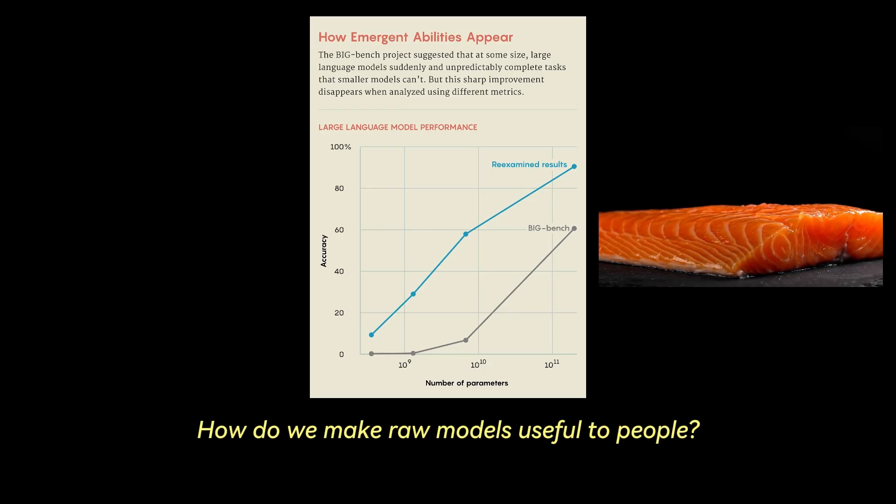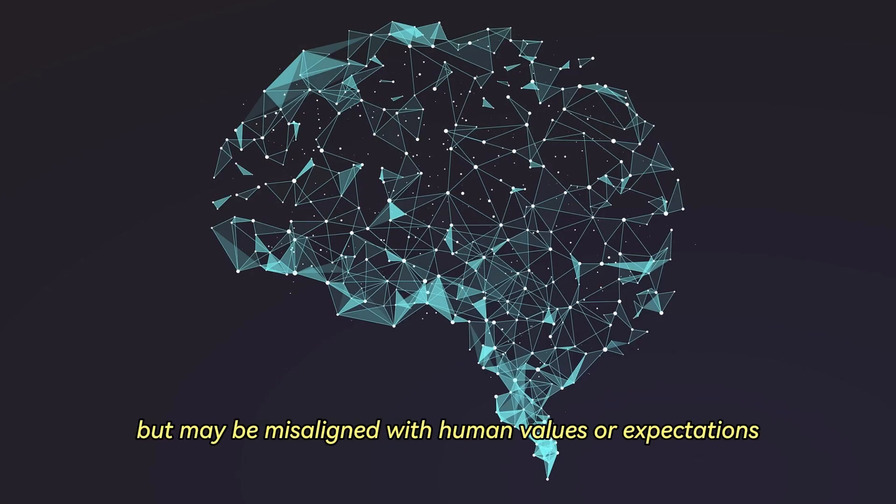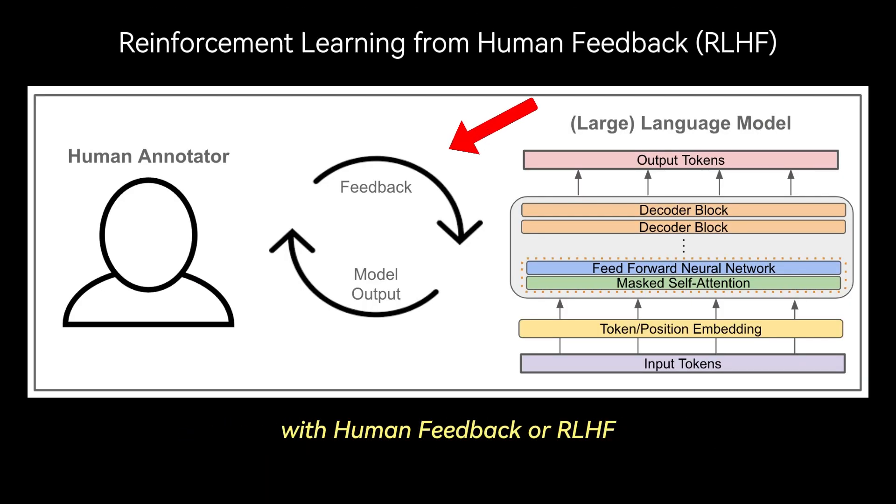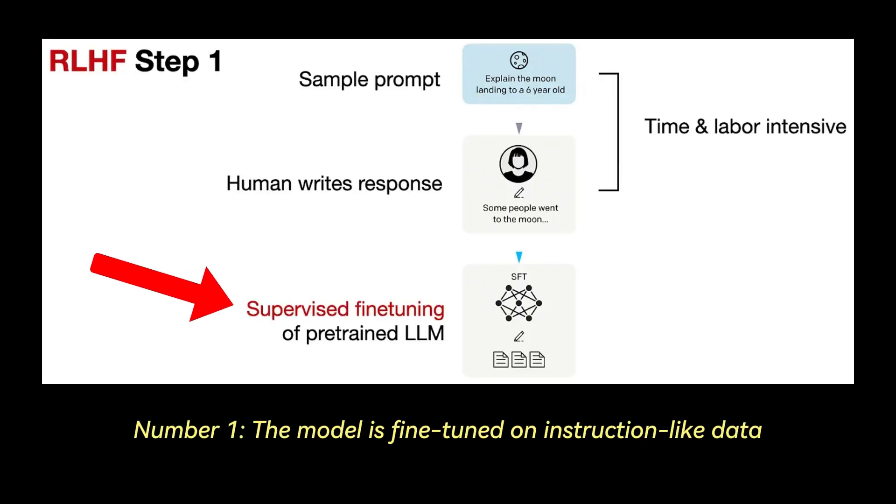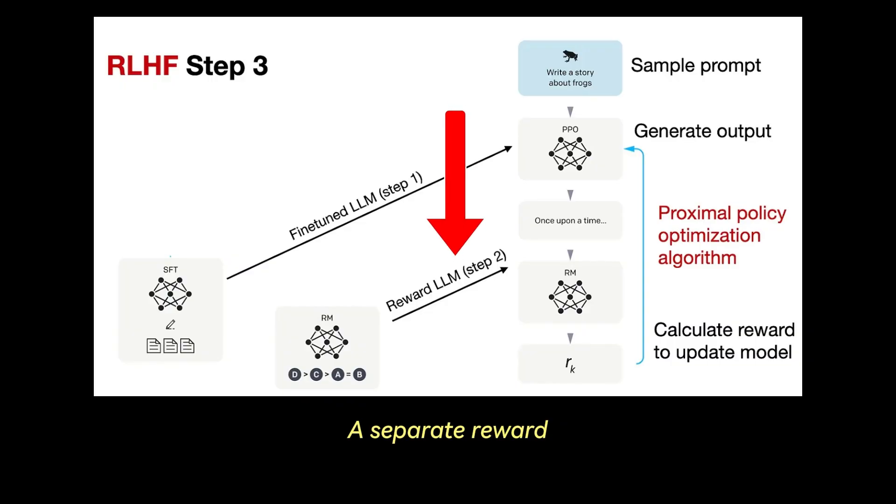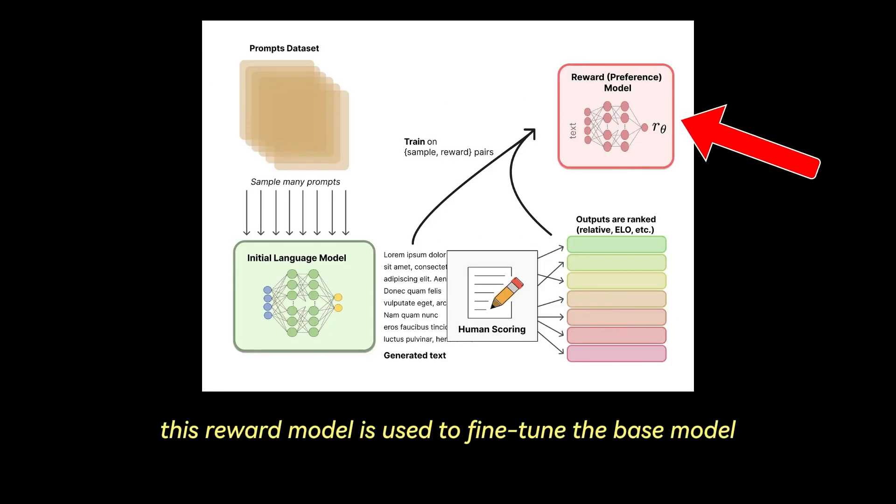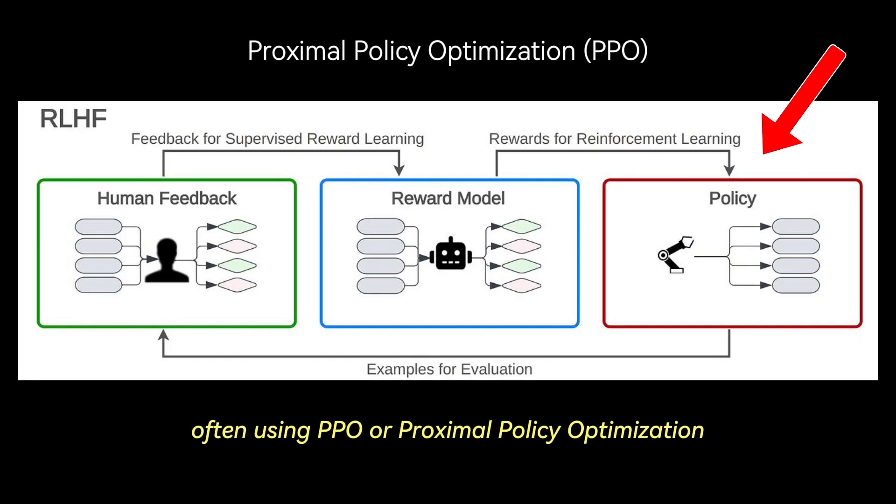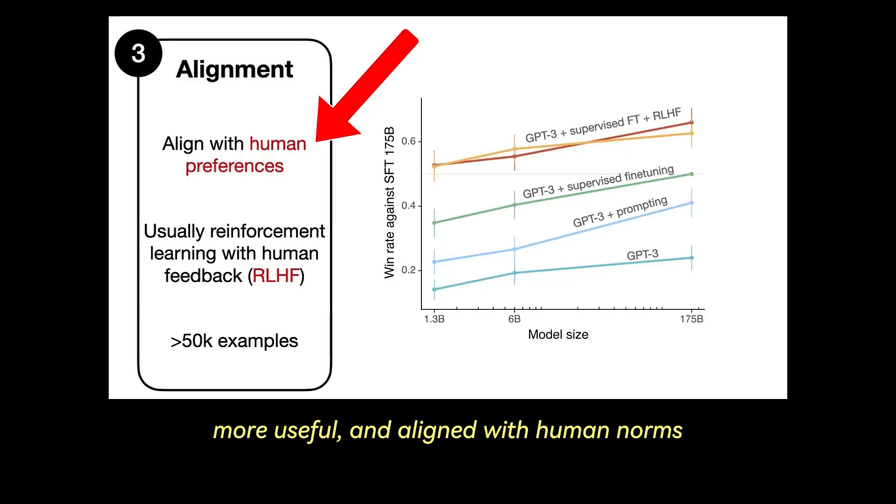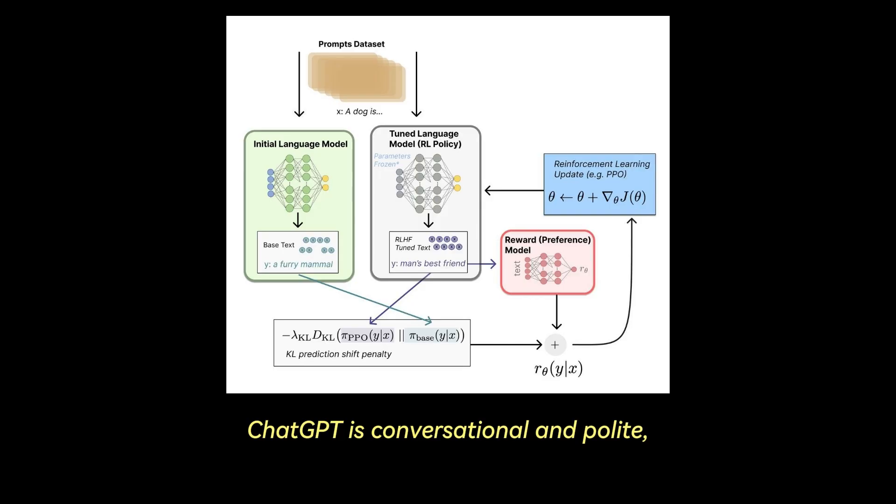How do we make raw models useful to people? The base LLM trained on next-token prediction can produce fluent text, but may be misaligned with human values or expectations. To fix this, modern LLMs go through reinforcement learning with human feedback, or RLHF. This process has three steps. Number one, the model is fine-tuned on instruction-like data, so it starts responding in a helpful, structured way. Number two is that human labelers rate multiple responses to the same prompt, for example helpful versus harmful, verbose versus concise. And number three, a separate reward model is trained to predict these preferences, and then this reward model is used to fine-tune the base model via reinforcement learning, often using PPO or proximal policy optimization. This loop makes the LLM safer, more useful, and aligned with human norms. It learns to optimize not just for what's probable, but for what's desirable. RLHF is one of the main reasons ChatGPT is conversational and polite, rather than just fluent.